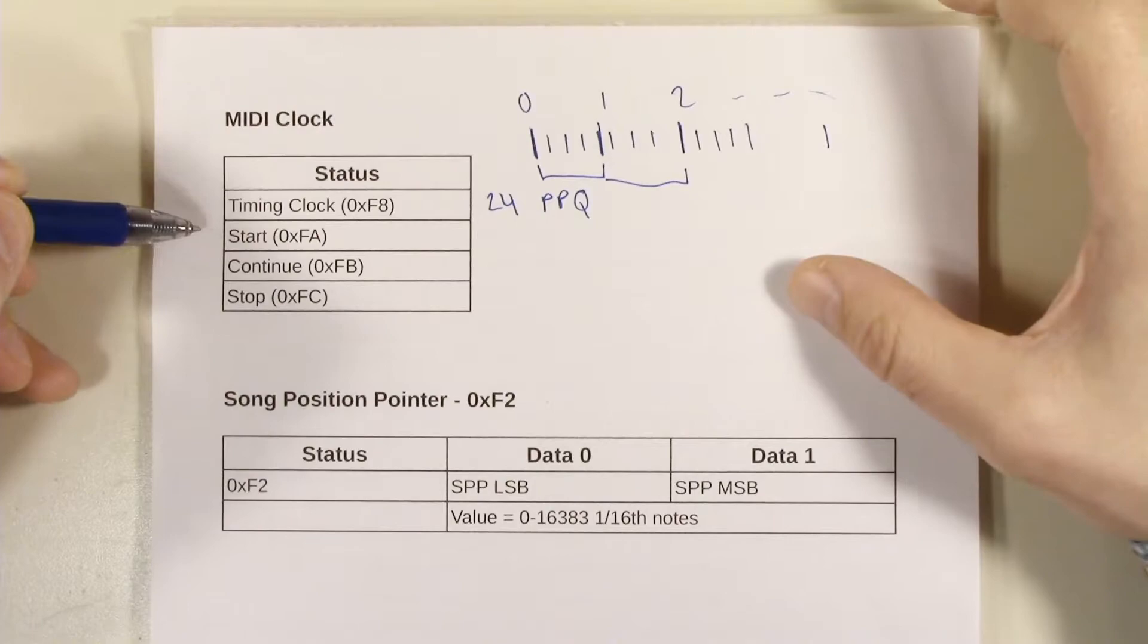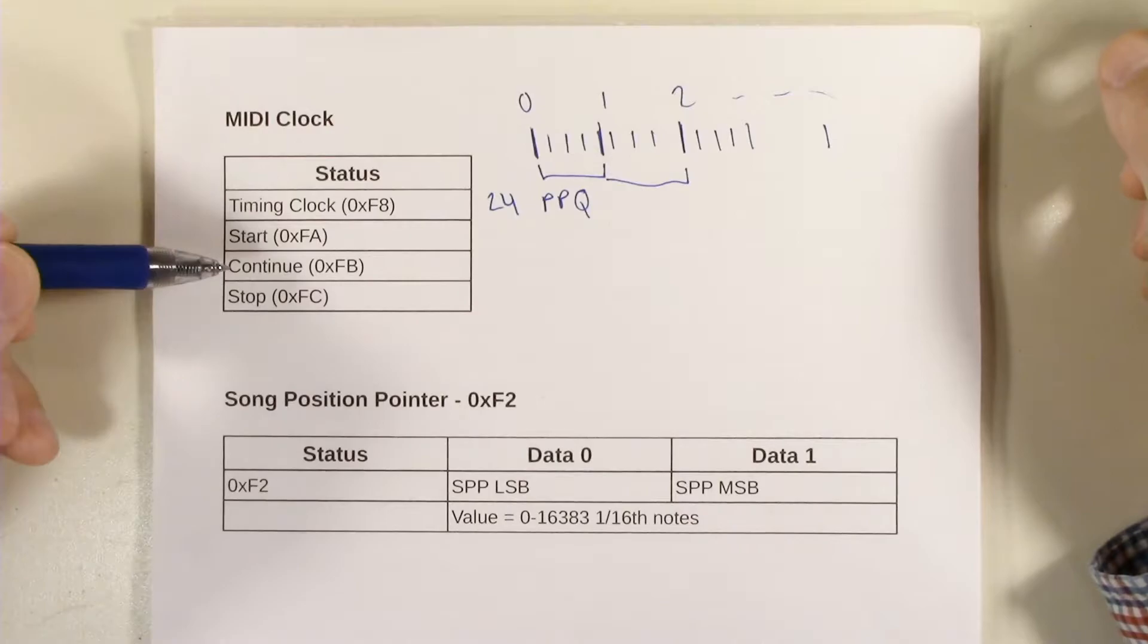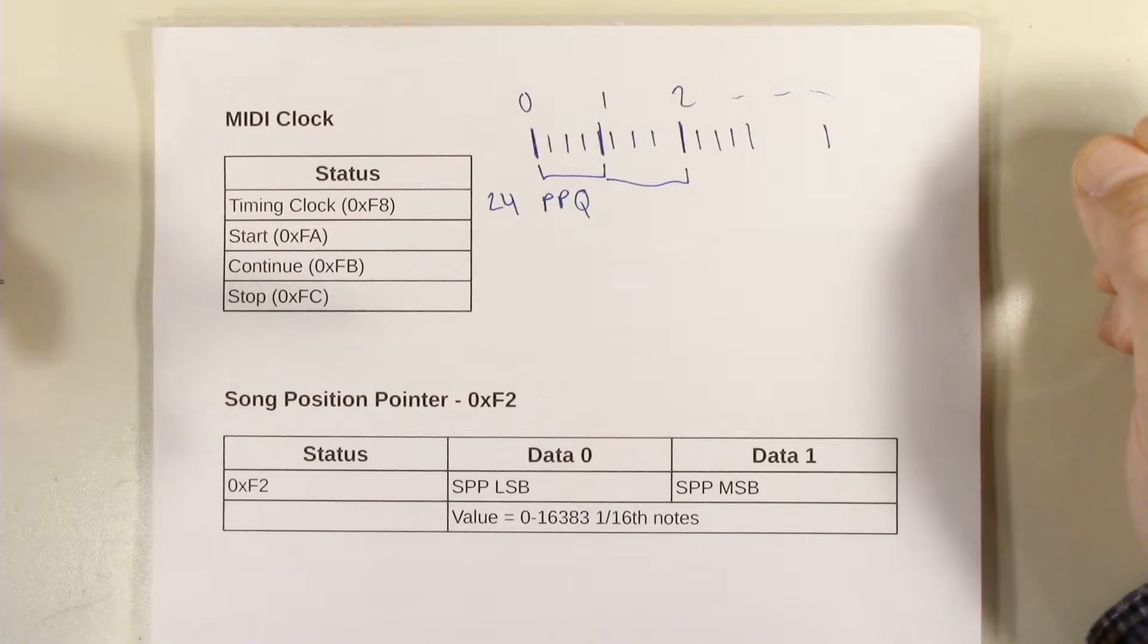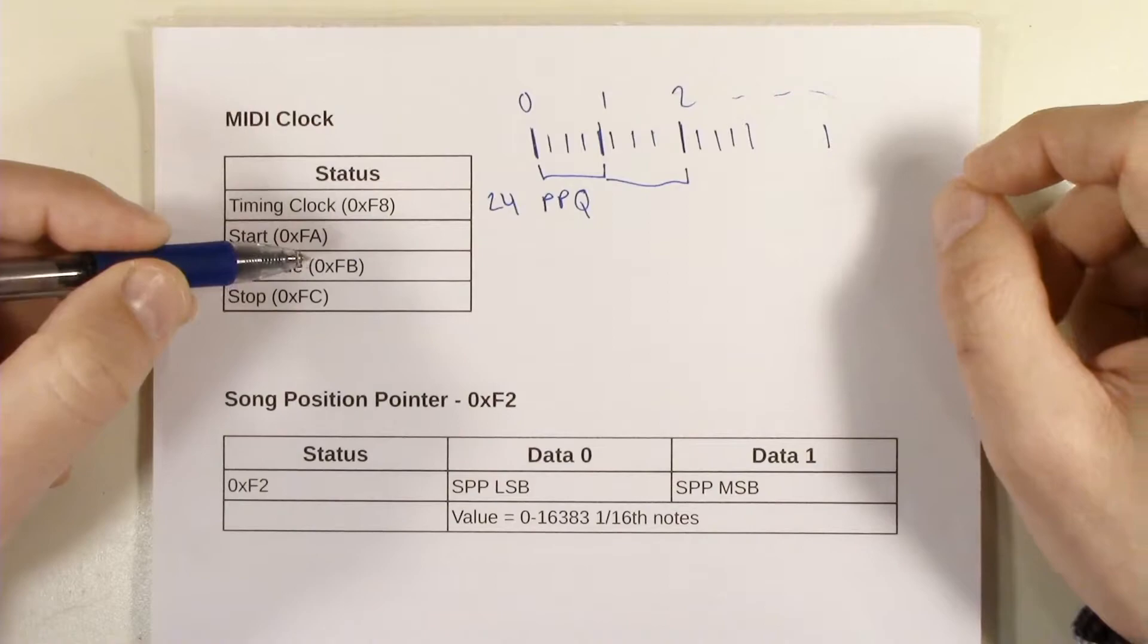Let's talk about these other three messages here for a second, the start, continue, and stop. So remember when I said that normally this clock is designed to be running all the time? These messages are the messages that are basically like the buttons on your tape transport that you might be familiar with in most music software, most hardware sequencers have buttons that are similar to this.